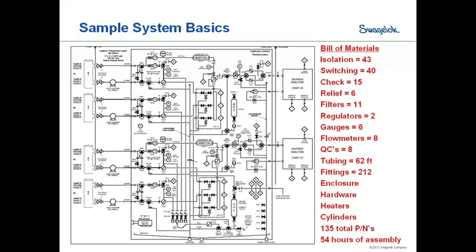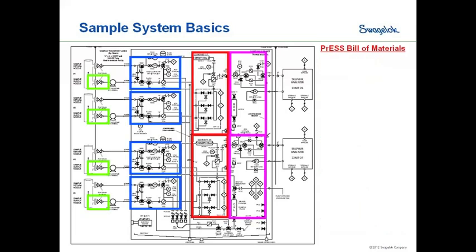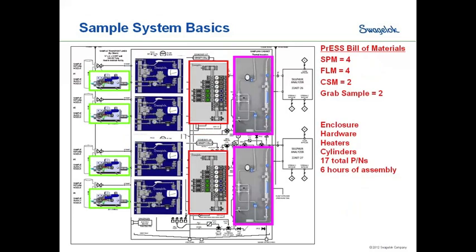That particular unit also requires approximately 54 hours of assembly man-hours, which is a considerable amount of time. With the PRESS methodology, we identify the repeat units within that online process system and standardize them. Using this approach, instead of 135 part numbers, we can cut this down to just 17. And the 54 hours of assembly becomes simply connecting one PRESS unit to the next, reduced to only six hours of assembly for a full four-stream sample system.